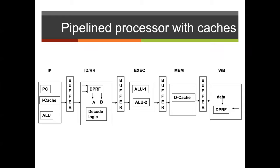When we consider how a cache affects our pipeline in the various stages, instead of memory we can incorporate an appropriate cache for the areas as needed. In this case, we have it in both the instruction fetch stage as well as in the memory stage. This allows us to make effective use of appropriate cycle times in the pipeline, depending on whether the results yield a hit or a miss with regards to the cache.